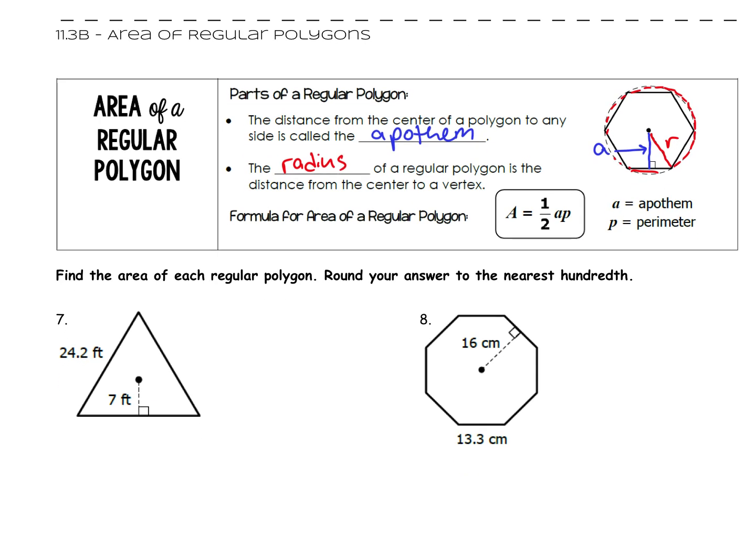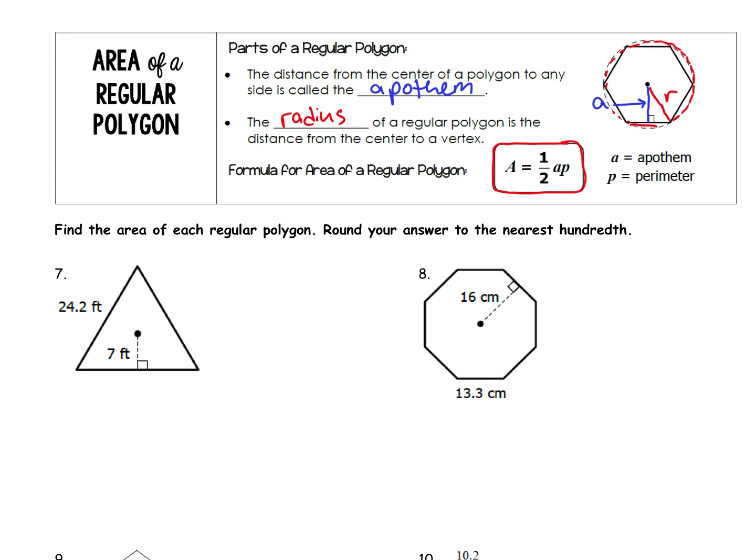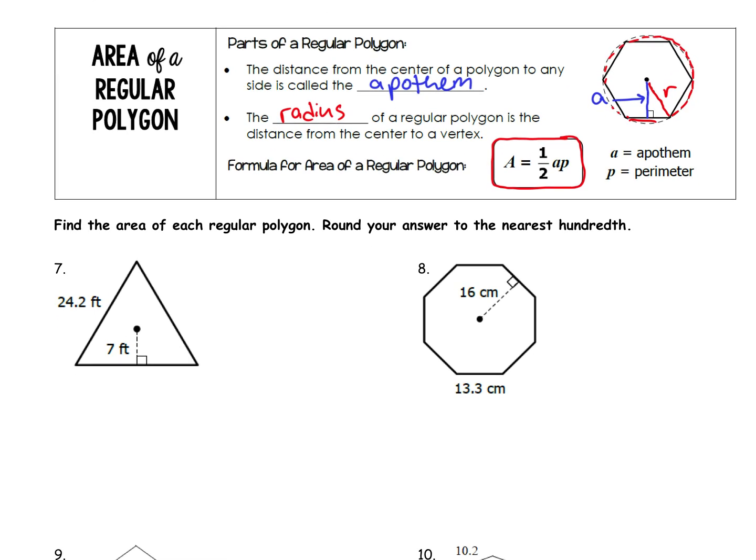The formula for the area of a regular polygon just comes down to this: the area of a regular polygon is equal to one-half times the apothem A times the perimeter. Now one thing we have to be careful about. In number one, this is not one-half times seven times 24.2. It's not. We have to do a little bit of extra work, which I'm going to show you how to do here. The key feature that we need is the perimeter. In number seven, based on what we did yesterday, we need to find the area of each regular polygon. We're going to round our answer to the nearest hundred.